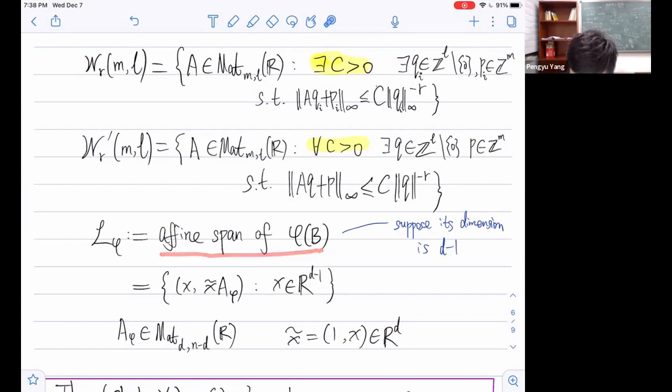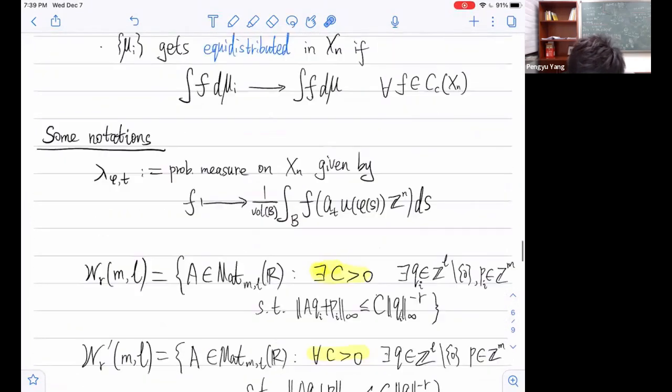What we have shown is that if we can prove equidistribution of push forwards of this submanifold in homogeneous space, then we can show almost every point is non-improvable. So now our new goal is to show the following: find suitable conditions on the affine span of this submanifold to ensure equidistribution holds. We also would like to parameterize our affine span. Recall that this is our submanifold. We take its affine span, which is denoted by L_B. Suppose this affine span has dimension d-1.